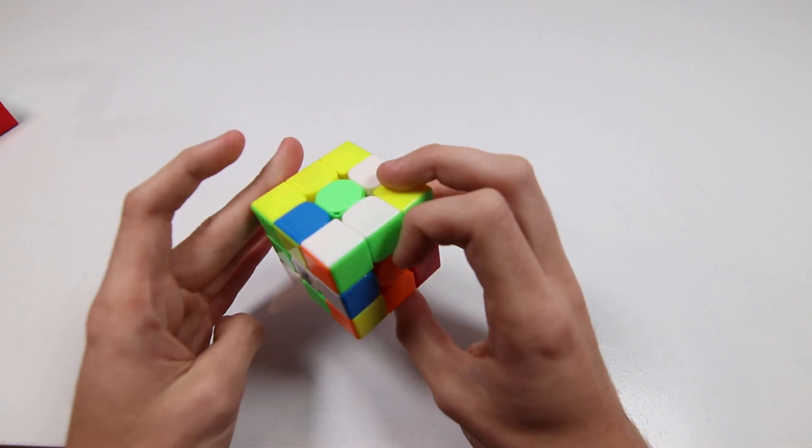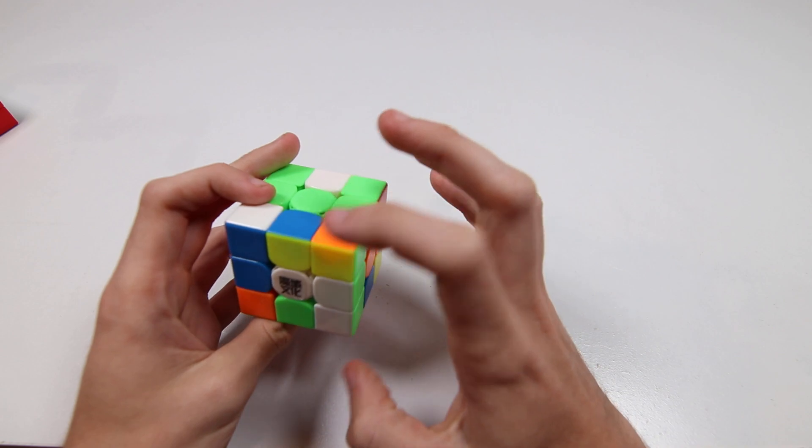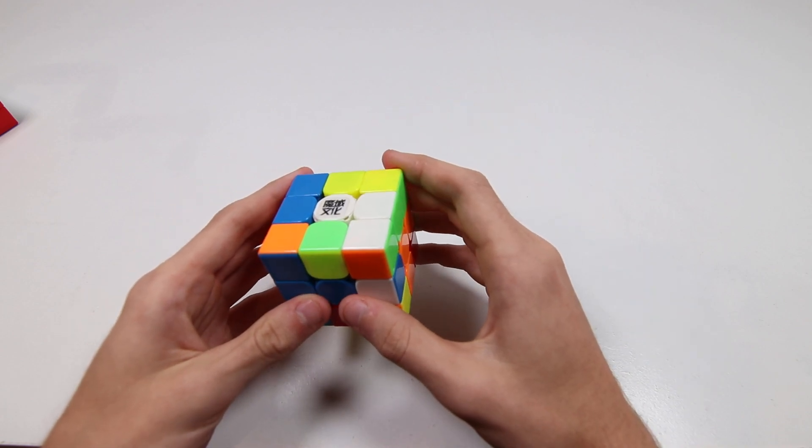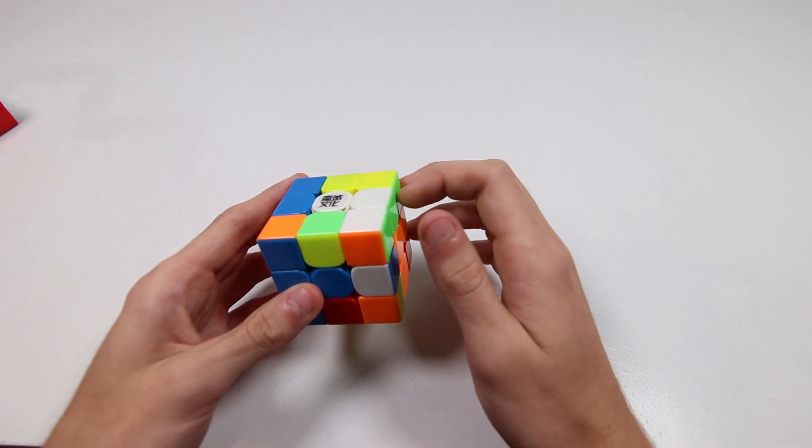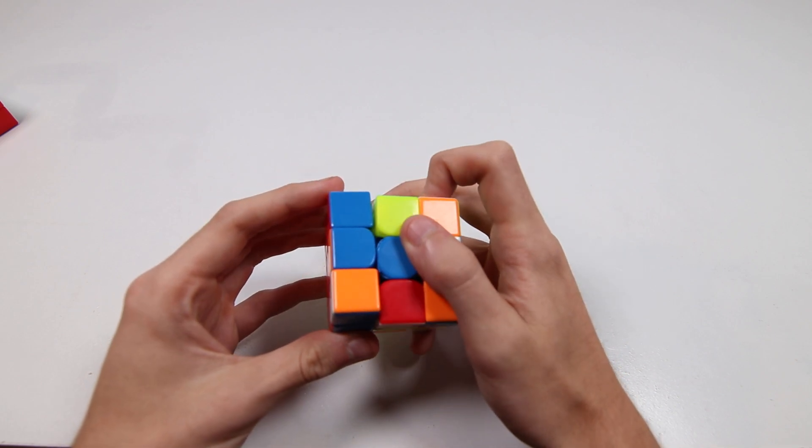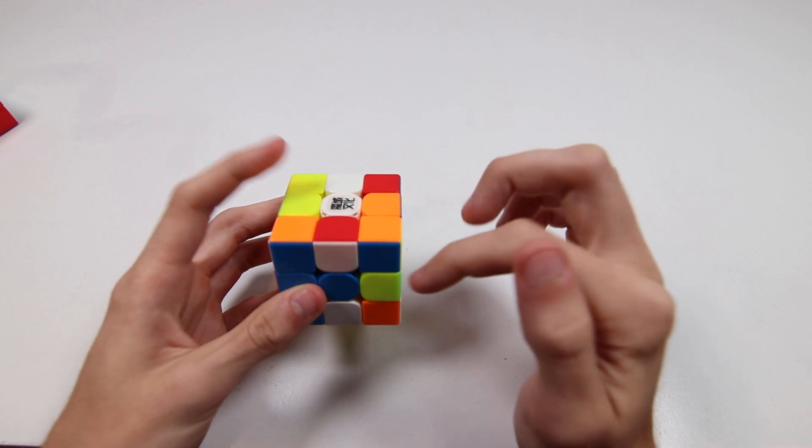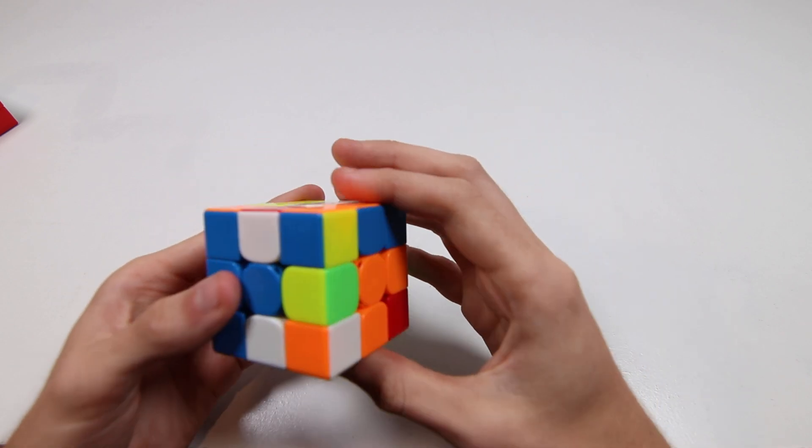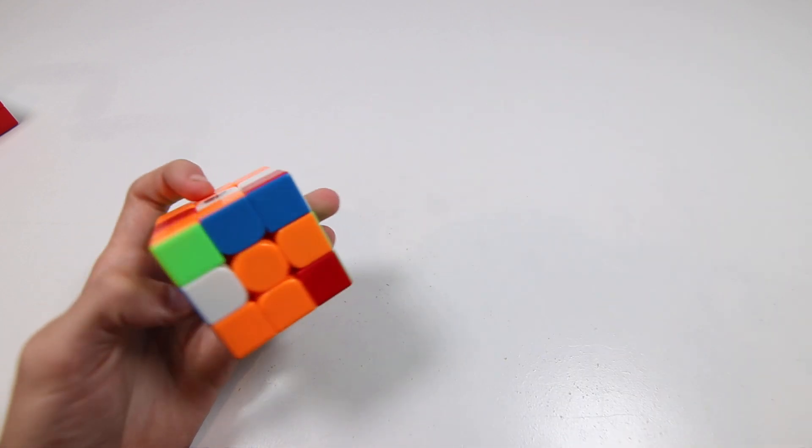So anyways what we do, we just solve our edges, I'm going to start with this orange one here, and then we can solve these two in either order, doesn't really matter. Could do something like, if you want to get a little fancy, you could do this to move this edge here, move this to the left so you have these two in a line, and then do something like that to give you the XX cross.